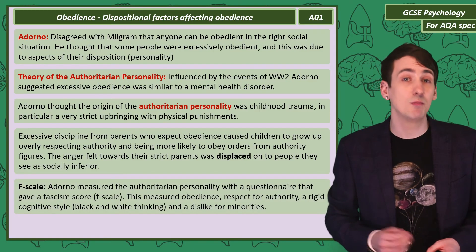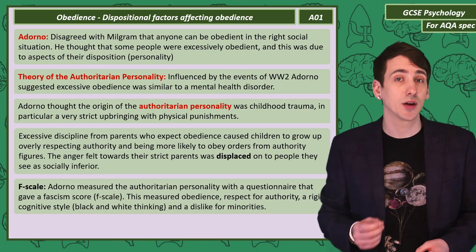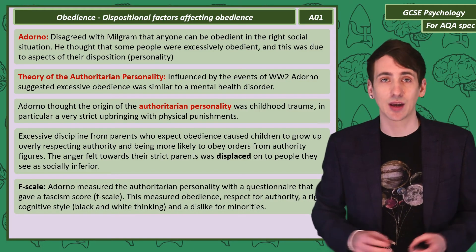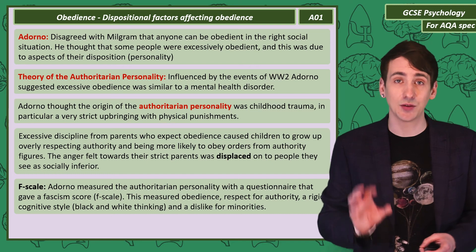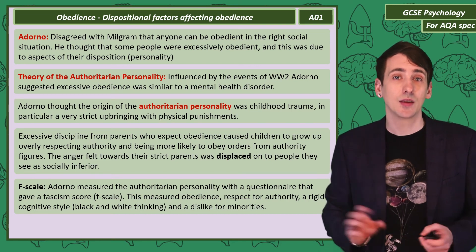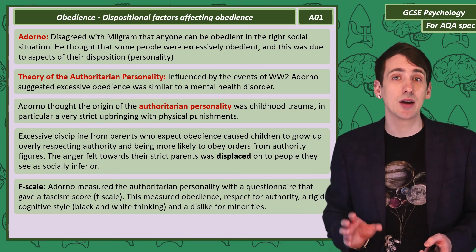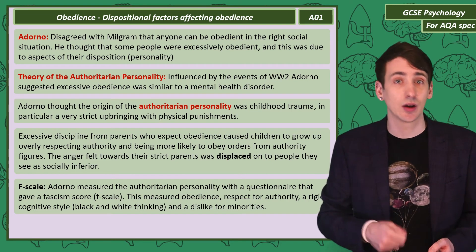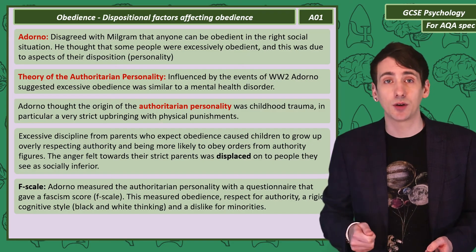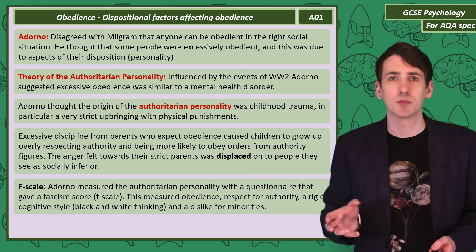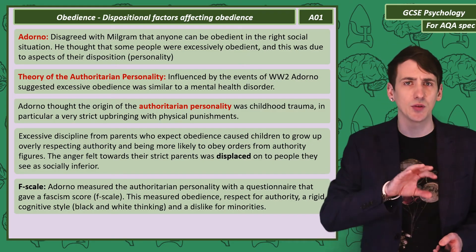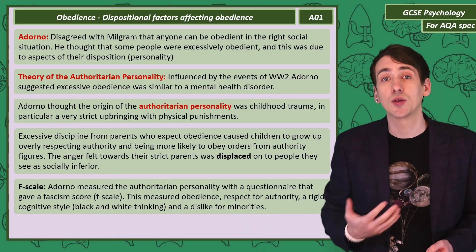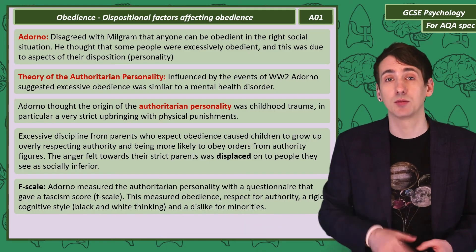Adorno developed a way of measuring the authoritarian personality called the F scale, where F stands for fascism. This is a questionnaire measuring, among other things: obedience, respect for authority, a rigid cognitive style — meaning these people see everything in black and white — and a dislike for minorities.